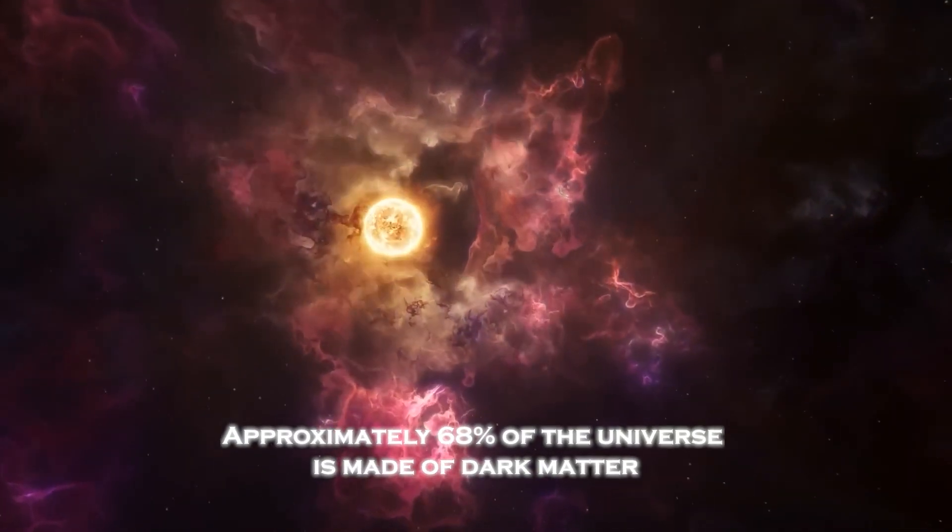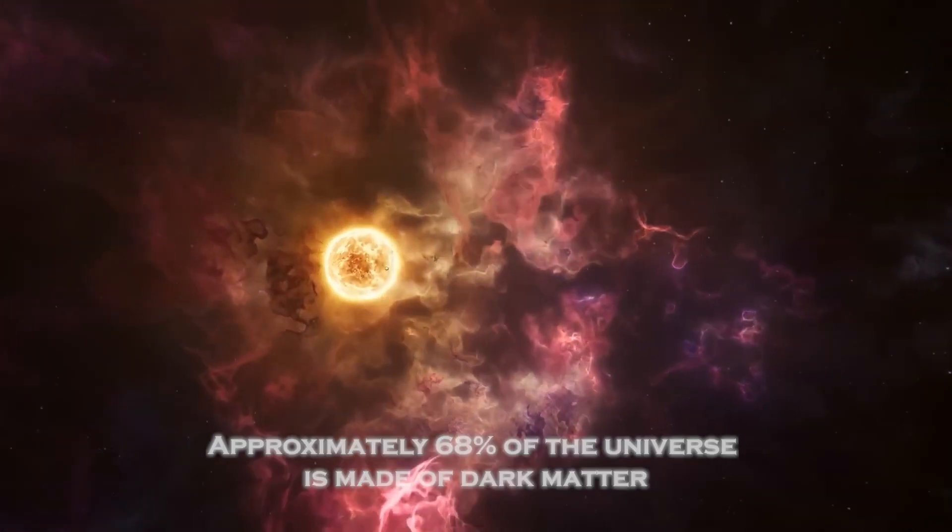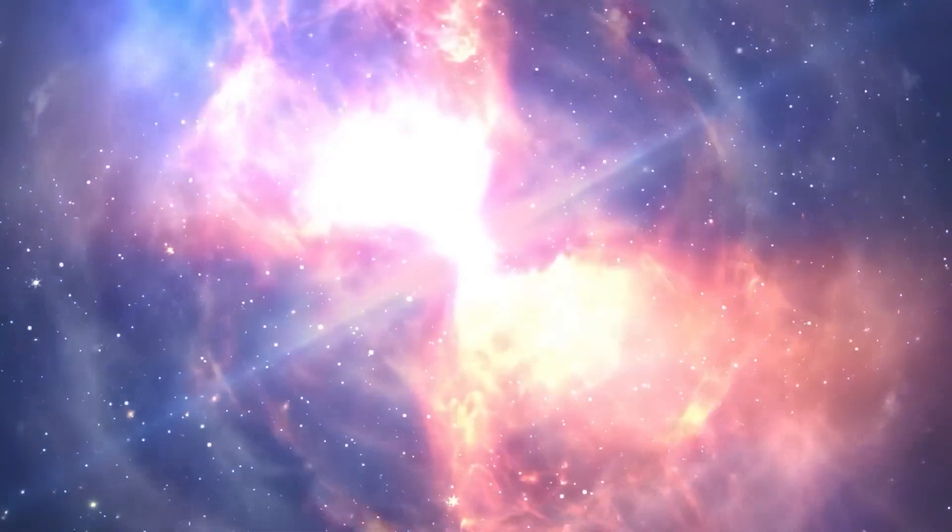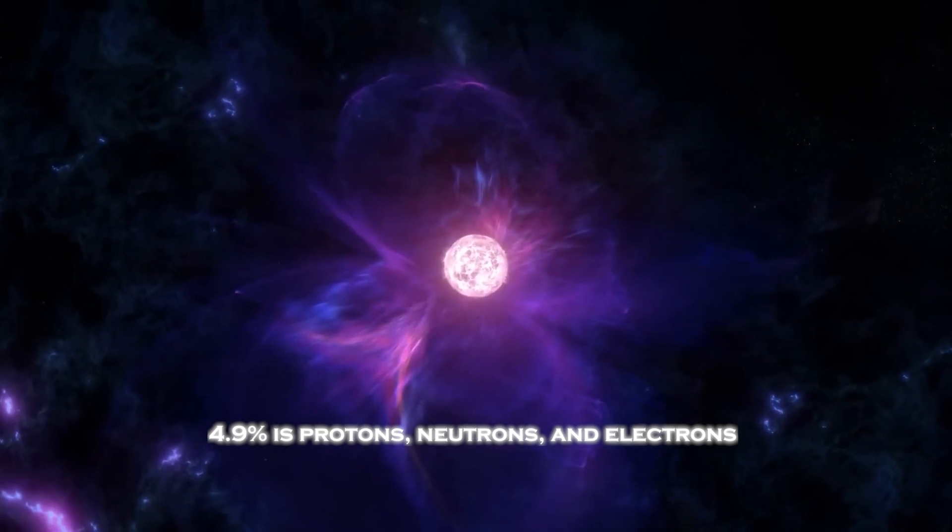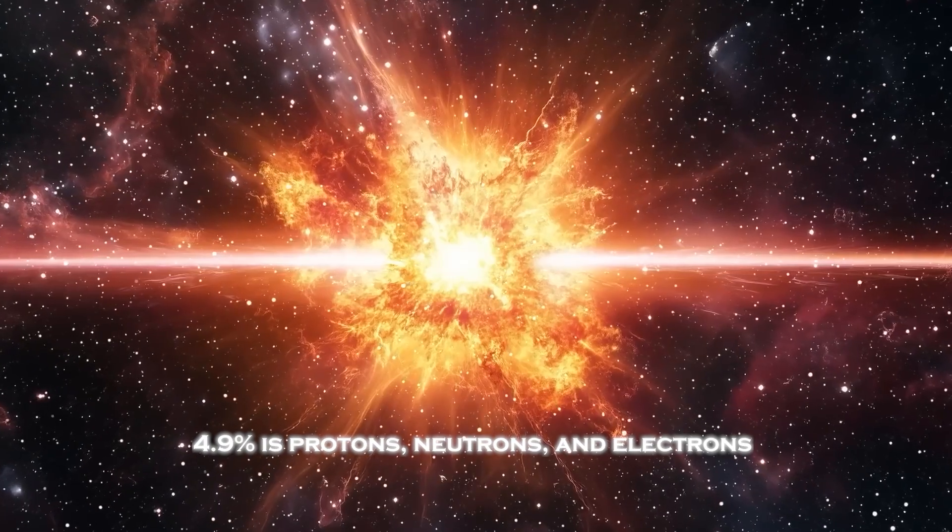This allows us to learn about its composition: approximately 68% of the universe is made of dark energy, equivalent to a cosmological constant, 27% is dark matter, and about 4.9% is protons, neutrons, and electrons.